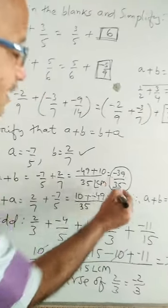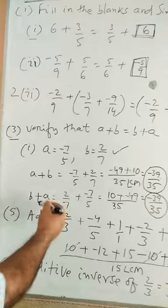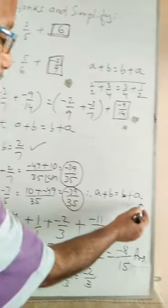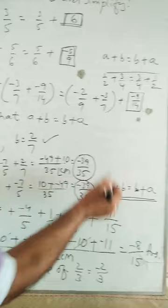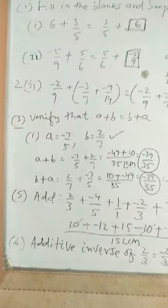So, we found that a plus b value is equal to b plus a value. Therefore, a plus b equal to b plus a, which is also called commutative property of rational numbers.